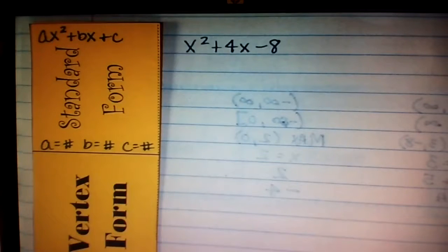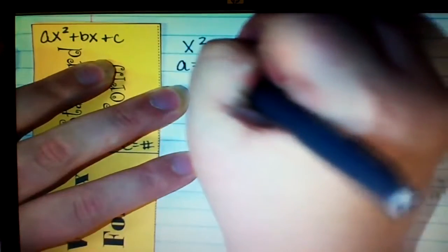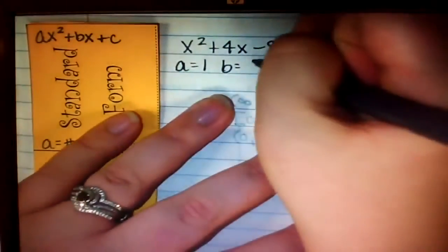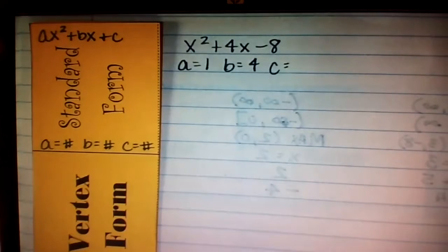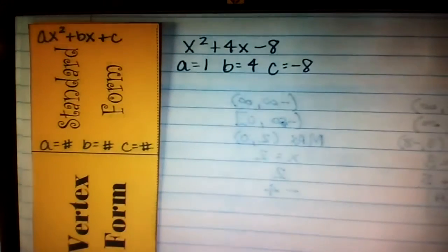X squared plus 4X minus 8 is a standard form of a quadratic. So, anytime you're dealing with these, the first thing I want you to do is identify your A value, your B value, and your C value. You're going to need those. So, my A value is the number, the coefficient in front of X squared, which is a 1. Your B value is the number found in front of X, which is a 4. And your C value is the number that's all by itself. Negative 8. Good. Don't forget to take the sign with it. It's minus 8, so it's negative 8.